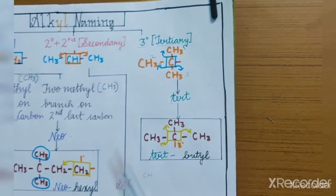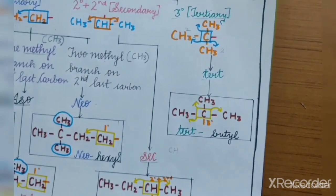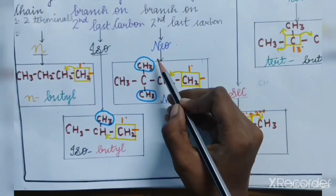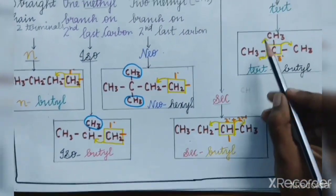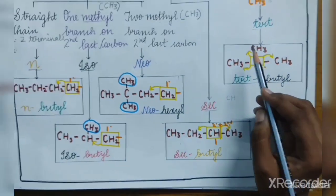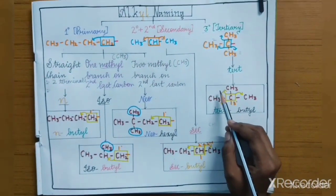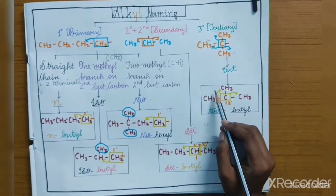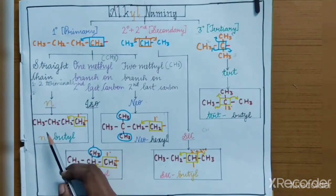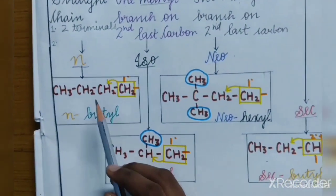These are the five prefixes used in alkyl naming: N, iso, neo, sec, and tert. Now with the help of examples we will learn when to use each prefix. In this first example, we will give the name using the steps.